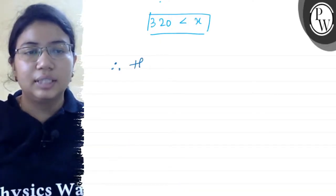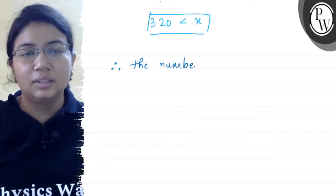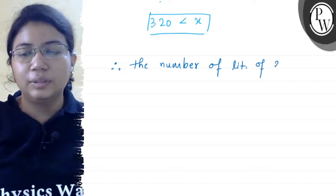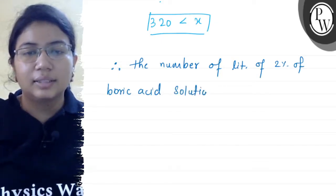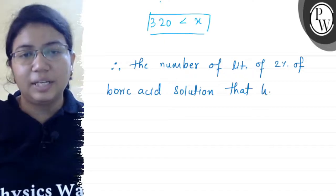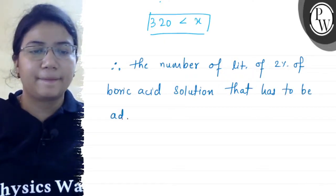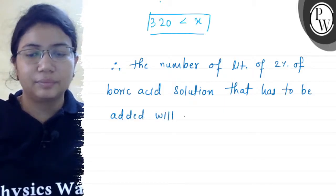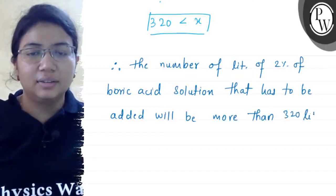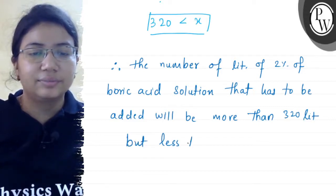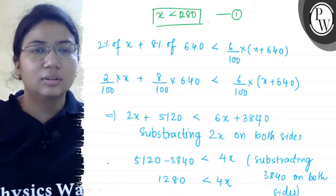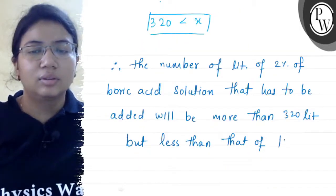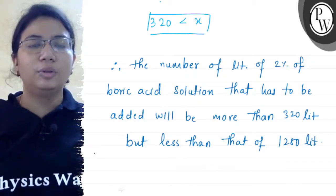Therefore, the number of liters of 2% boric acid solution that has to be added will be more than 320 liters but less than 1280 liters. Hope you have understood it well. All the best.